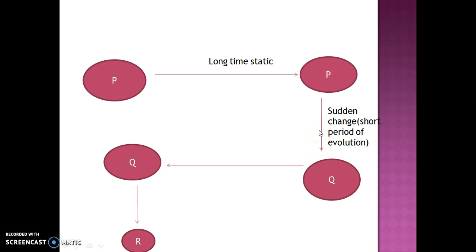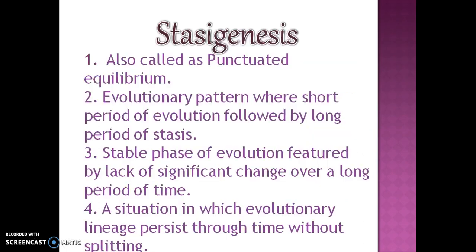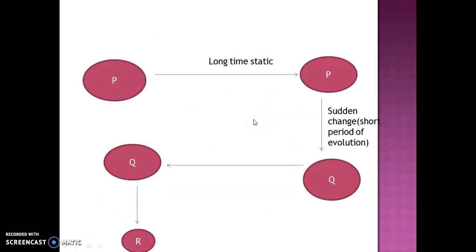Short period of evolution is called sudden change. Stasigenesis is also called punctuated equilibrium. It is an evolutionary pattern where short periods of evolution are followed by long periods of stasis, as shown in this diagram.